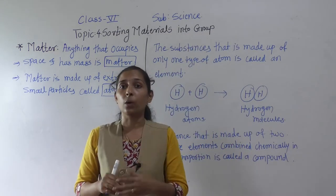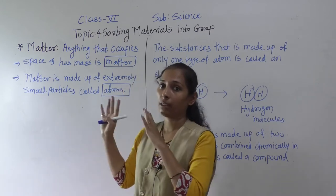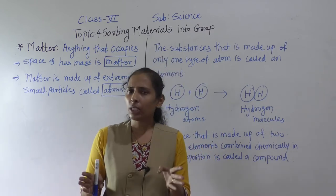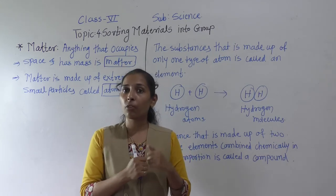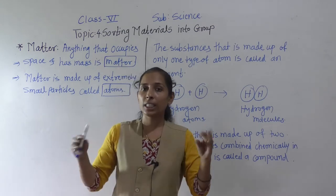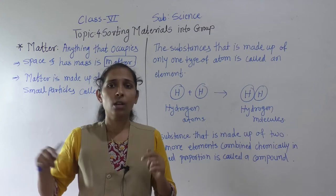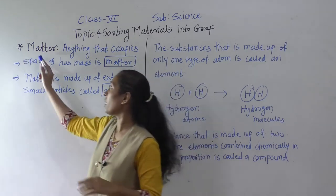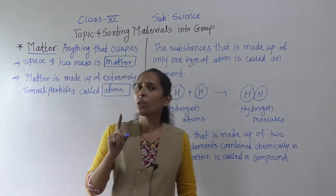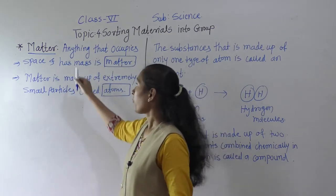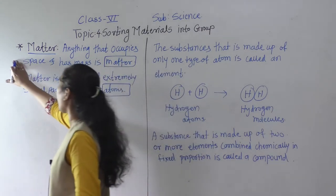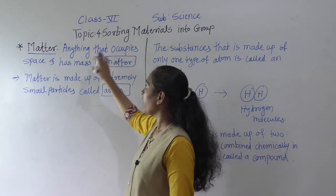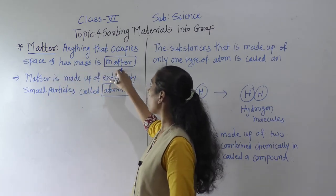Today we will discuss about what is meant by matter. We have seen that different materials are there, and from those different materials we make objects. But have you thought about how those materials are made, and from which things? All the things around us are made up of materials, and the materials are made from matter. Anything that occupies space and has mass is called matter.